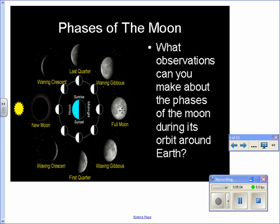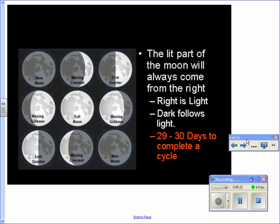Now, the full moon, from the full moon you're going back towards the new moon phase. So now the dark comes from the right side, which is chasing out the light until it becomes completely dark. And then you have your new moon phase. The lit part of the moon will always come from the right. Remember, right is light. And the dark follows light.